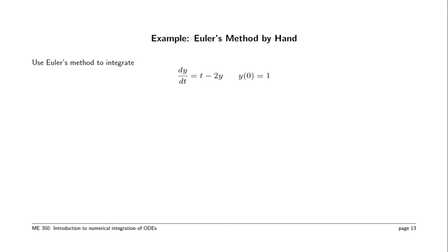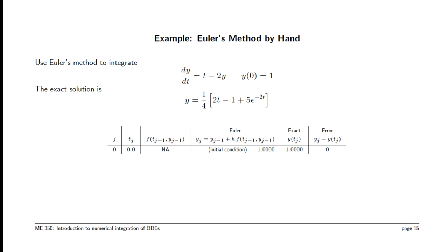Let's do this by hand. We have this differential equation, dy/dt equals t minus 2y, and the initial condition y(0) equal to 1. You can verify that this is the solution by substituting y into the right-hand side and left-hand side, and see if they're equal. And then you can also evaluate the initial condition to make sure that that is equal to 1.